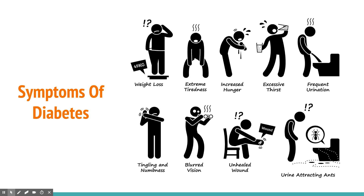High glucose levels in the blood also stimulate the thirst center in the brain, making you drink a lot of water, and consequently you pass a lot more urine. Other symptoms include tingling and numbness because glucose irritates the nerves, causing diabetic neuropathy. High glucose can also cause swelling of the lens in the eye, leading to blurred vision. Injuries to the foot or hands may go unnoticed due to loss of pain sensation, and wounds can become infected and fail to heal for months.